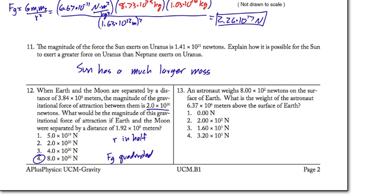And number 13. An astronaut weighs 800 newtons on the surface of Earth. What is the weight of the astronaut 6.37 times 10 to the 6 meters above the surface of the Earth? Well, the trick here is realizing that if this is the radius of the Earth, they're now at that new distance from the Earth. The radius of the Earth is 6.37 times 10 to the 6 meters, and they're 6.37 times 10 to the 6 meters further away. So in this case, we've doubled the distance from the center of the Earth.